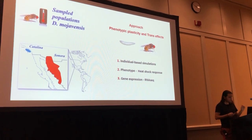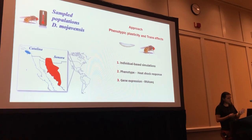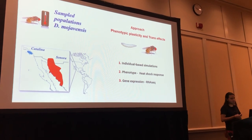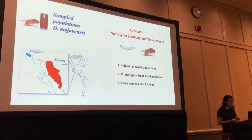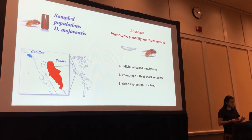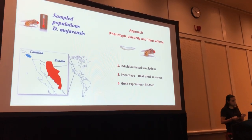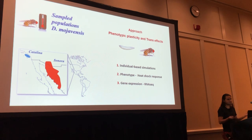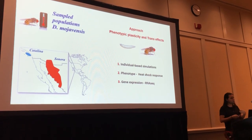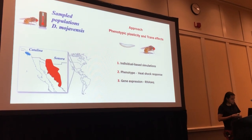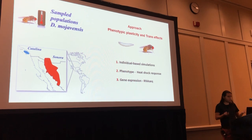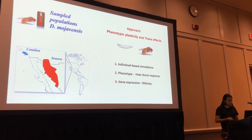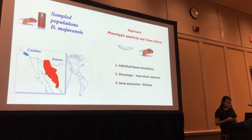We wanted to measure phenotypic plasticity and transgenerational effects — the component of each effect on the thermal adaptation of Drosophila mojavensis — in two different life stages: larvae and adults. We used three different approaches. First, we used that same model to perform individual-based simulations using real climatic data from these two populations, and asked whether the level of fluctuation in these populations is enough for plasticity and transgenerational effects to evolve. Second, we measured the phenotypic plasticity and transgenerational effects component of the heat response of the flies. Finally, we explored gene expression related to these effects.